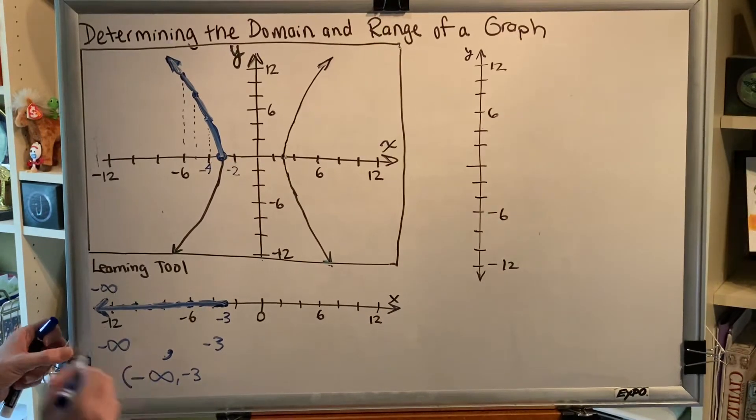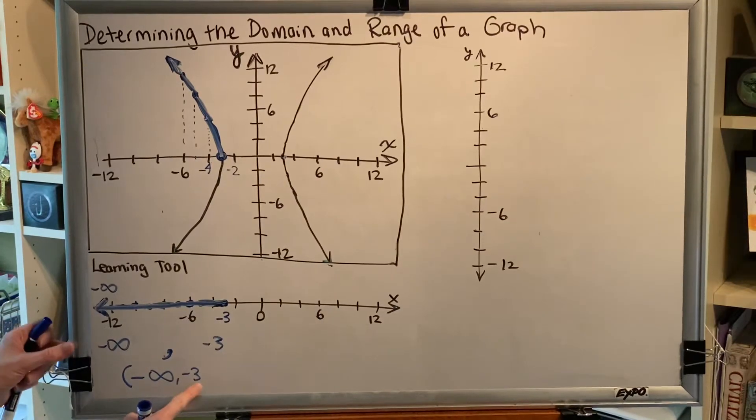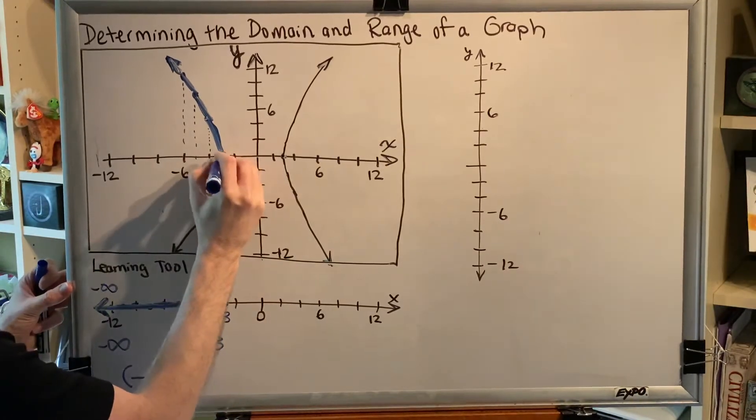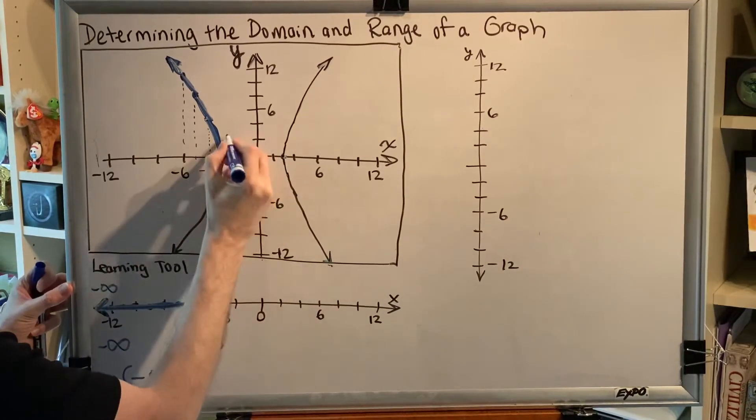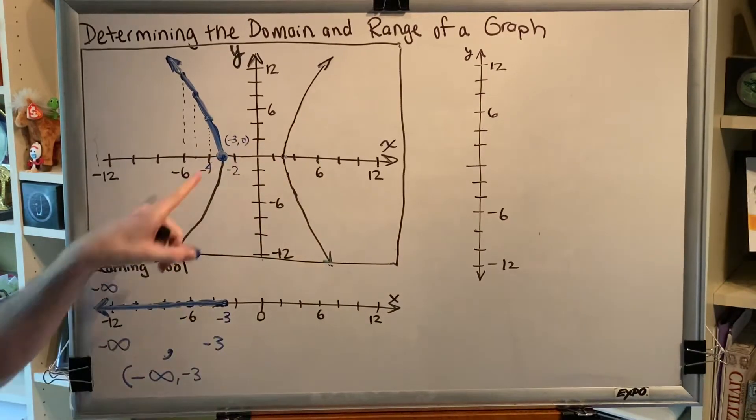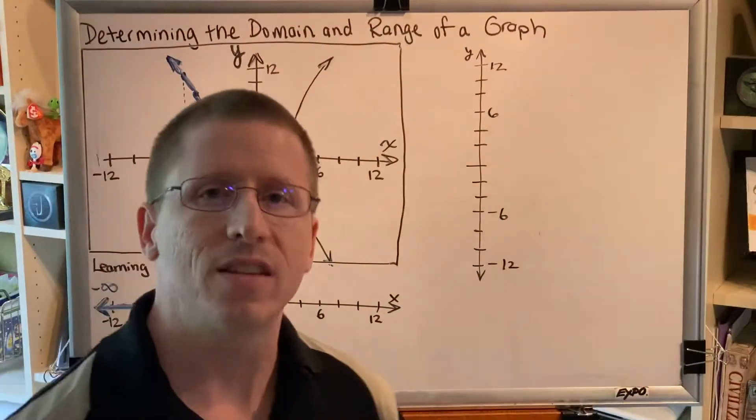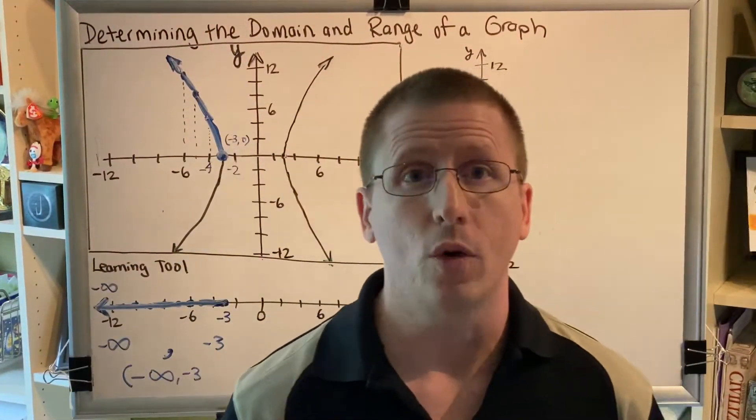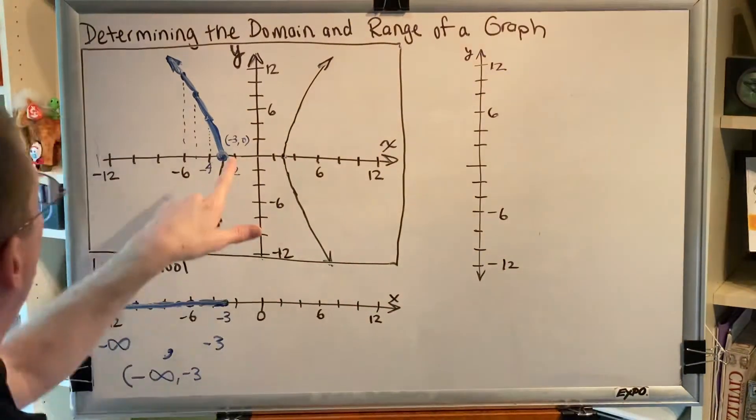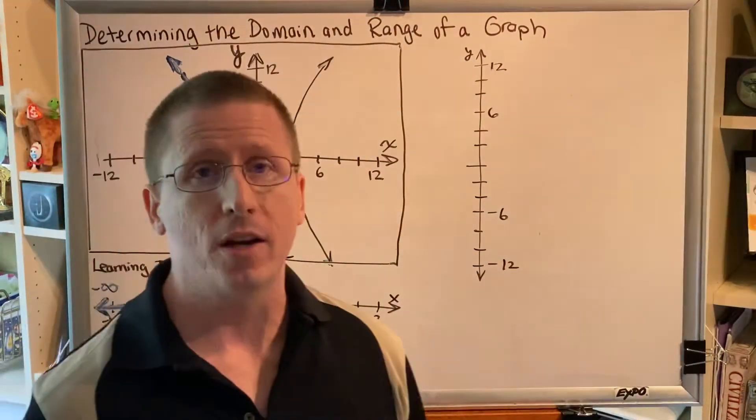Well, infinity always gets a parenthesis symbol. But do we include or exclude the negative 3? Let's be thoughtful. Do we have a point on our graph with an x-coordinate of negative 3? The answer is yes. It's right here. Negative 3 comma 0. And if domain is the collection of all of the points of the graph, all of the x-coordinates, well then certainly I have to include negative 3 in my domain. And what's the symbol to include? A bracket.